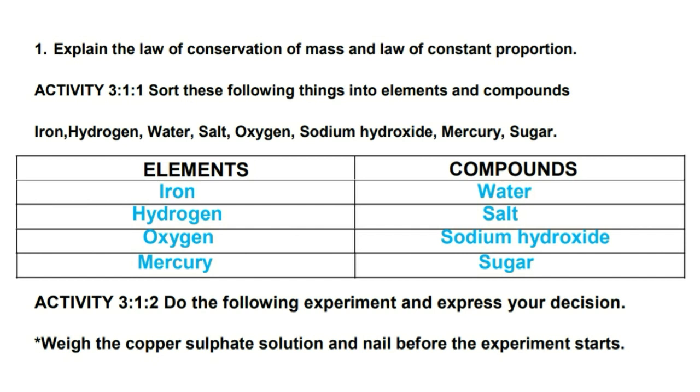Whereas compounds are the mixtures of two or more elements. Here we can easily separate the elements: iron, hydrogen, oxygen, and mercury - these are all elements. Whereas water is made up of hydrogen and oxygen; salt is made up of sodium and chlorine; sodium hydroxide is made up of sodium, oxygen, and hydrogen; and sugar is also made up of three types of elements: carbon, hydrogen, and oxygen.